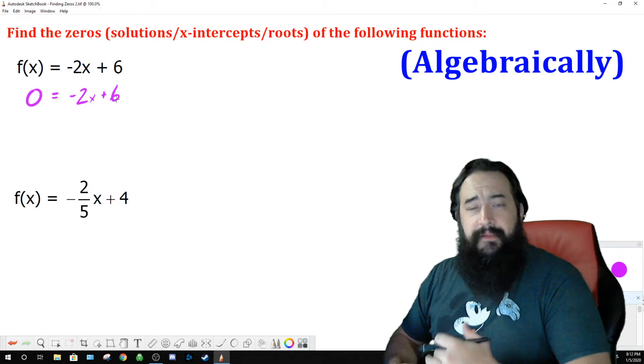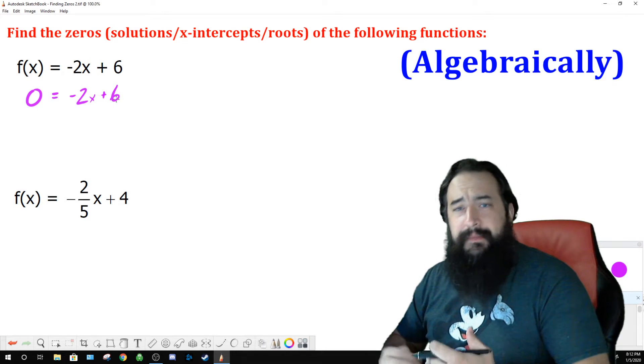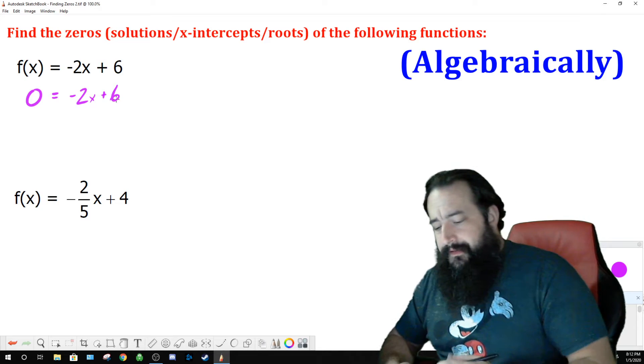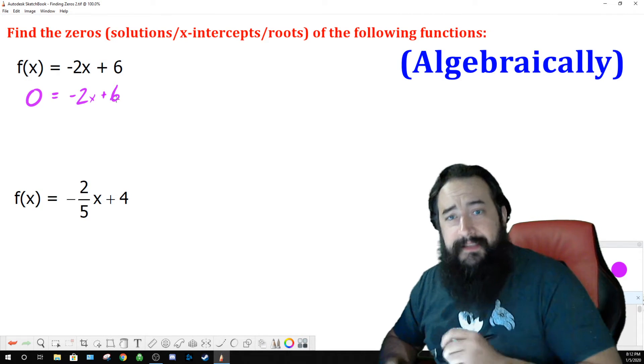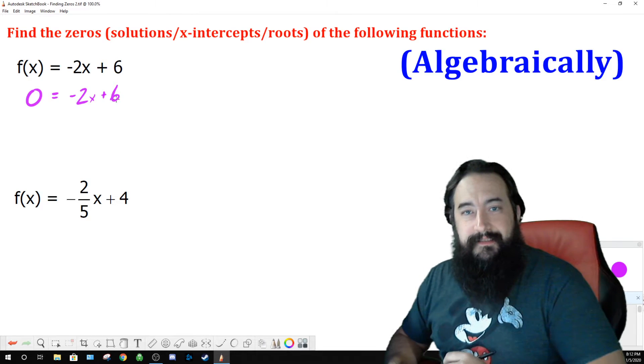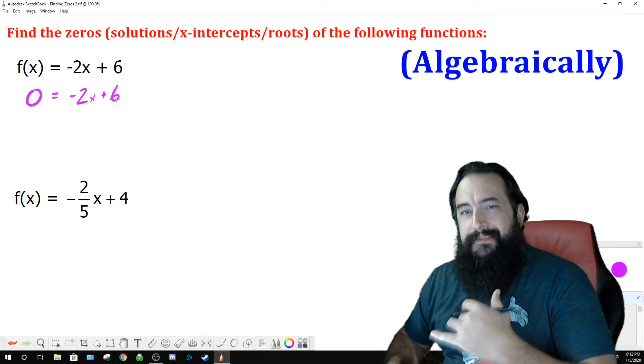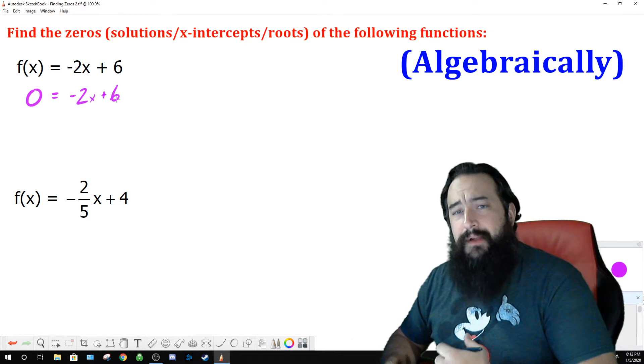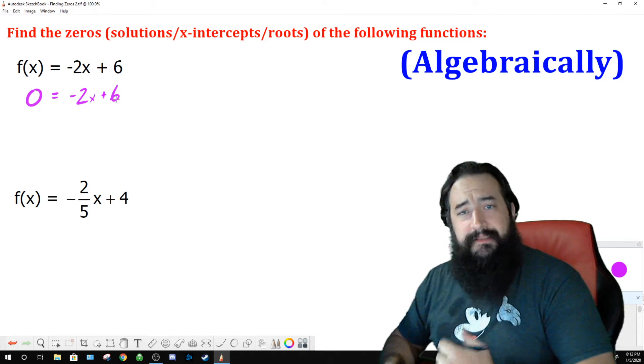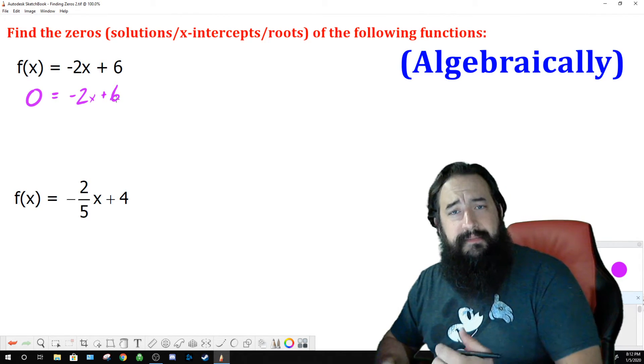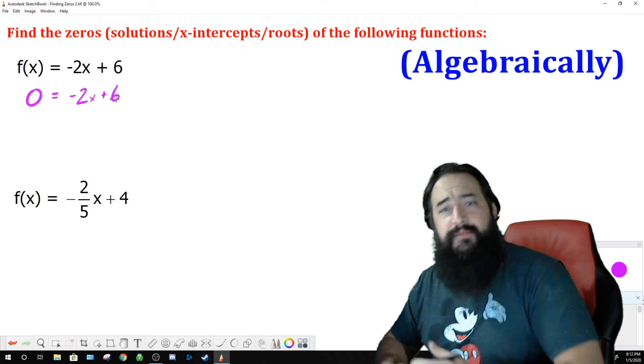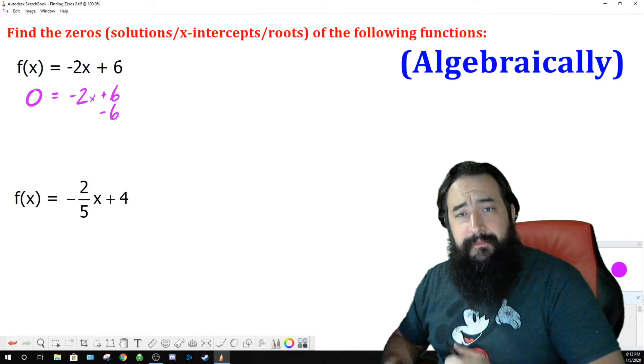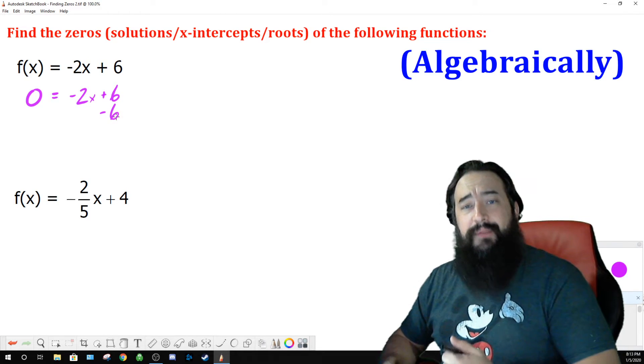The inverse property effectively gets rid of all the stuff that's happening to x, and then the property of equality is going to be what balances the equation. We want to start by working on the side that has our variable, which is the right side in this case, and we're going to first get rid of any term that doesn't have the variable in it. 6. It's a plus 6. The inverse property would have us add a negative 6 to make that go away. I'm going to write minus 6, because adding a negative 6 and subtracting 6 is the same thing. I'm going to subtract 6 on the right.